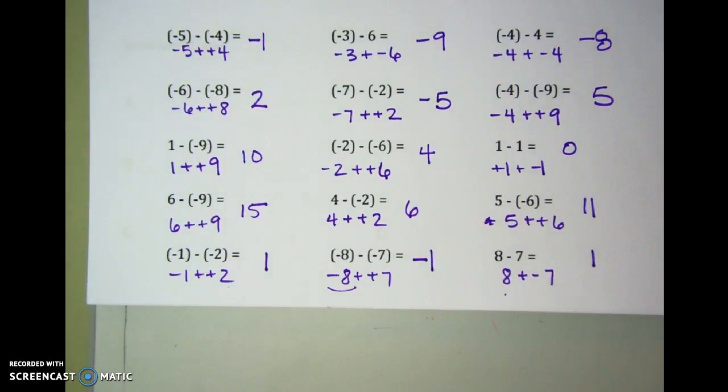So, I know it seems like a lot of different strategies. Number line, chip boards, adding the opposite. We'll get the hang of it. We'll do more practice. So if you're still a little confused, don't freak out yet. We will spend some time in class going over all of these. It might be helpful if you pick kind of a strategy that you stick to. If you like the number lines, stick with the number lines. If you like the chip boards, stick with the chip boards. And let me know what questions you have and what I can help you with.